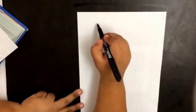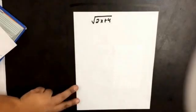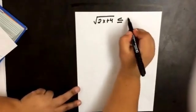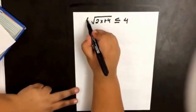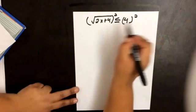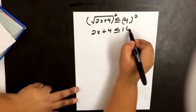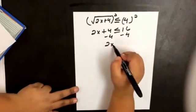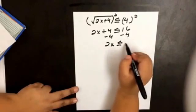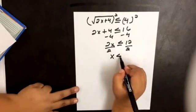Now for solving radical inequalities. If we have the square root of 2x plus 4 is less than or equal to 4, the first step is to square both sides. So 2x plus 4 is less than or equal to 16, which gives us 2x is less than or equal to 12. Dividing by 2, x is less than or equal to 6.